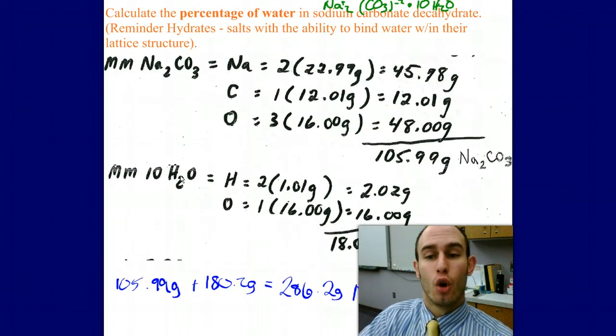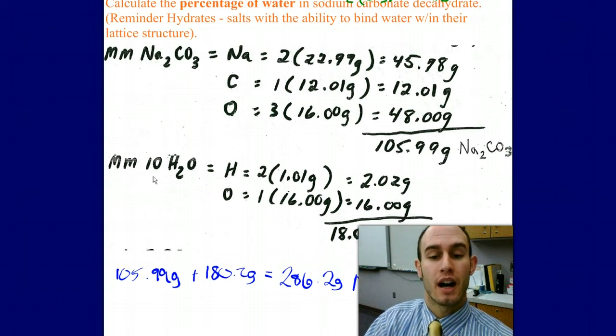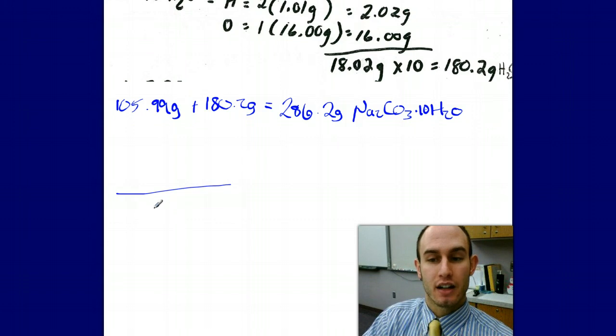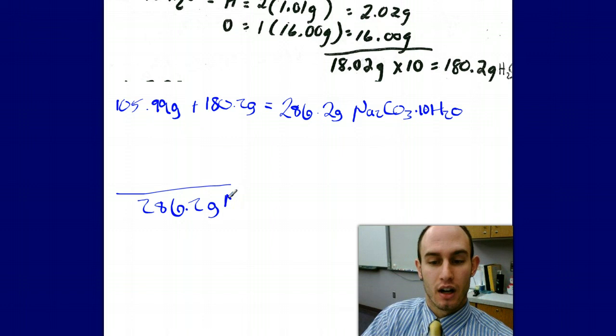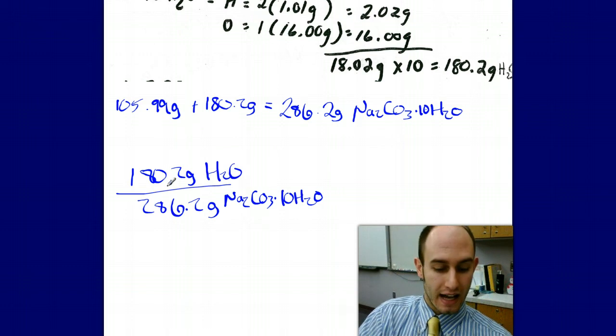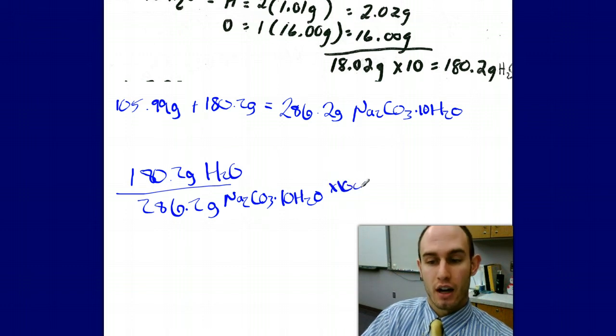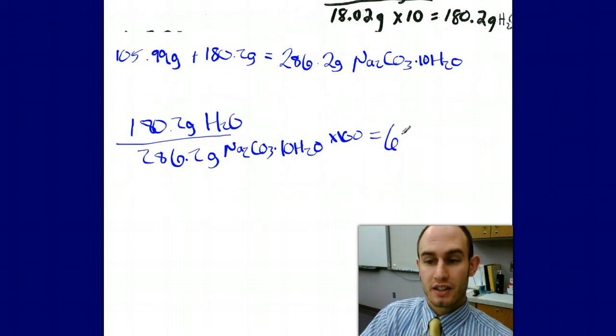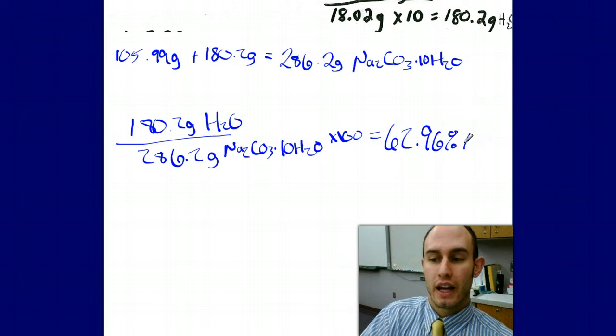Now going back to the initial question: what is the percentage of water in my compound? I need to know the percent of water. I'm going to take the mass of my entire compound, which I just found to be 286.2 grams of Na2CO3 with 10 waters, and I'm going to take the mass of my 10 waters, which is 180.2 grams of water. I'll divide those two and multiply by 100 to get my final answer of 62.96% H2O.